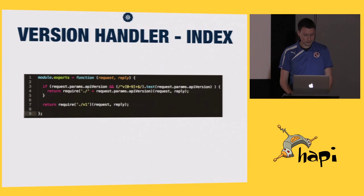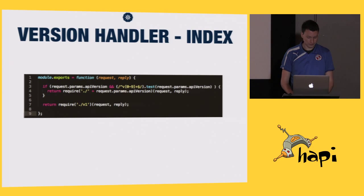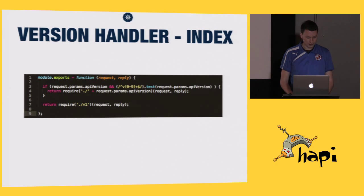What we first do is check to see whether an API version parameter has been set in the route, and we do a quick test to make sure that it just matches the V and then a number format with a regular expression — just for security purposes, never trust anything the user puts in. Then we require the local folder that matches that version number, and we pass through the request and the reply. Below that we have our default fallback, which says if no version is specified, give them version 1, because that's what they'll be expecting.